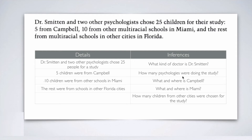How many psychologists were doing the study? How many doctors of psychology did the study? Three — there was Dr. Smitten and two other psychologists. We see again that it's not written in the text. There is nothing about three doctors or three psychologists. It just says there was Dr. Smitten and two others, so we count that there were three of them. But it is an inference — it's obvious, but it's not written in the text.